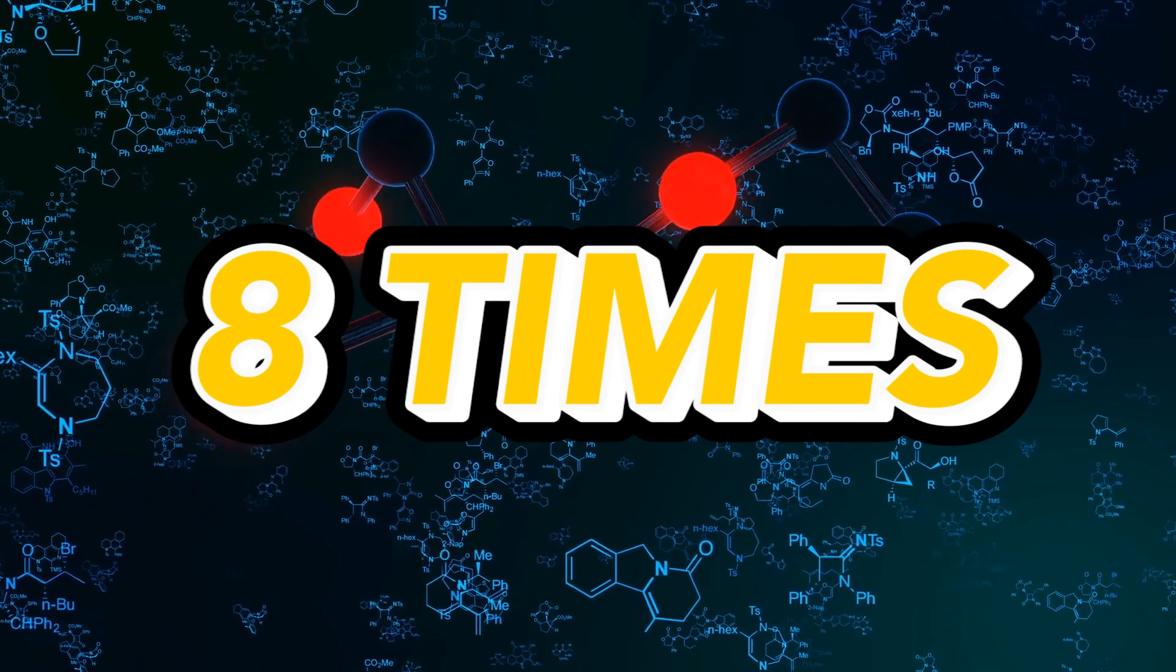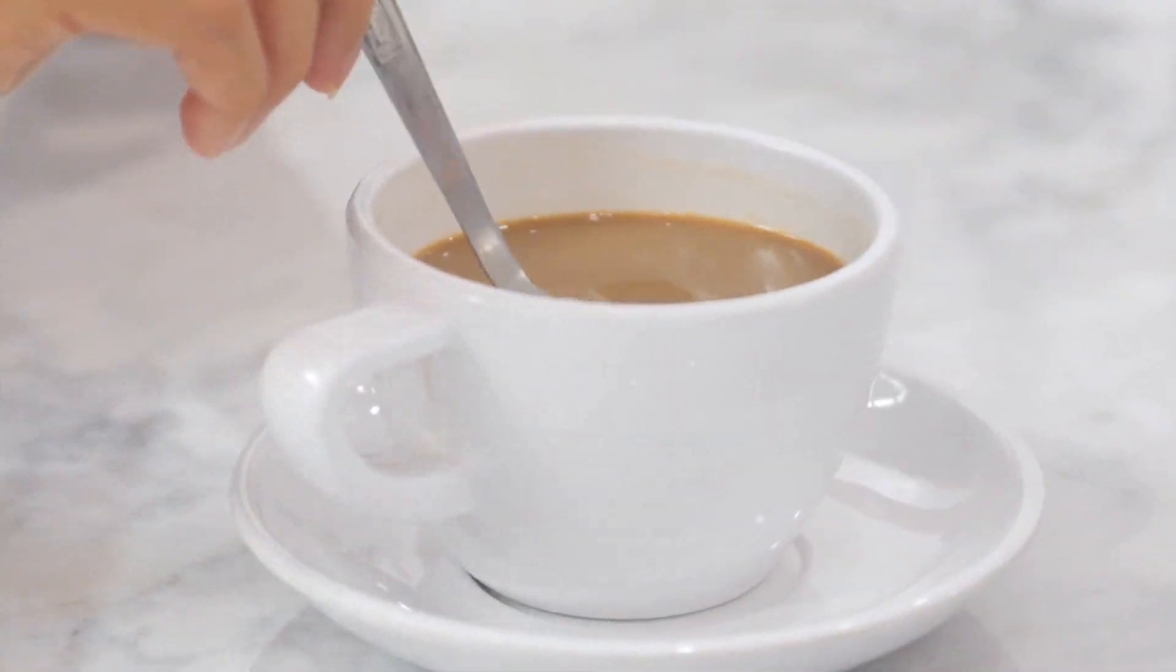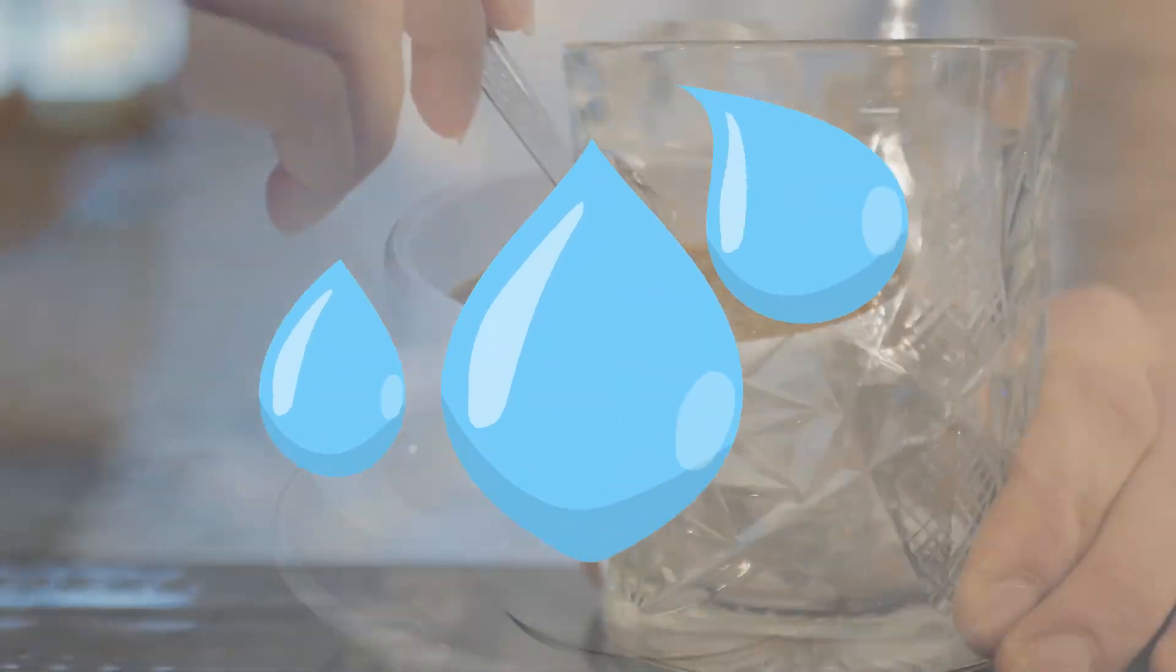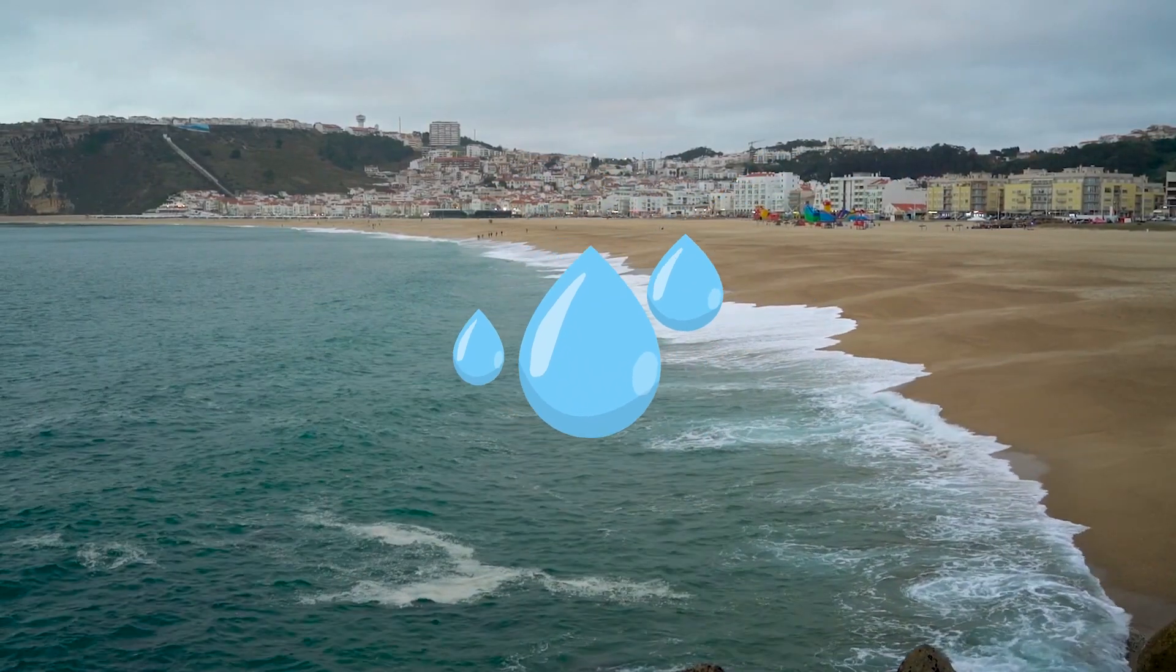There are about eight times as many atoms in a teaspoon of water as there are teaspoons of water in the entire Atlantic Ocean.